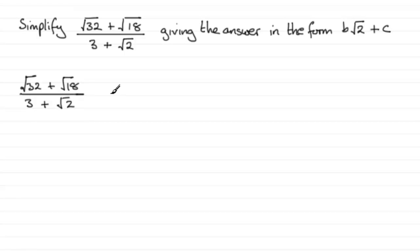Now in the previous part, we found out that the top here, root 32 plus root 18, turned out to be 7 root 2. So obviously we need to use that. And we also get a clue here that we've got to express everything in the form root 2. Now when it comes to the denominator here, let's just put down what we've got, 3 plus root 2.